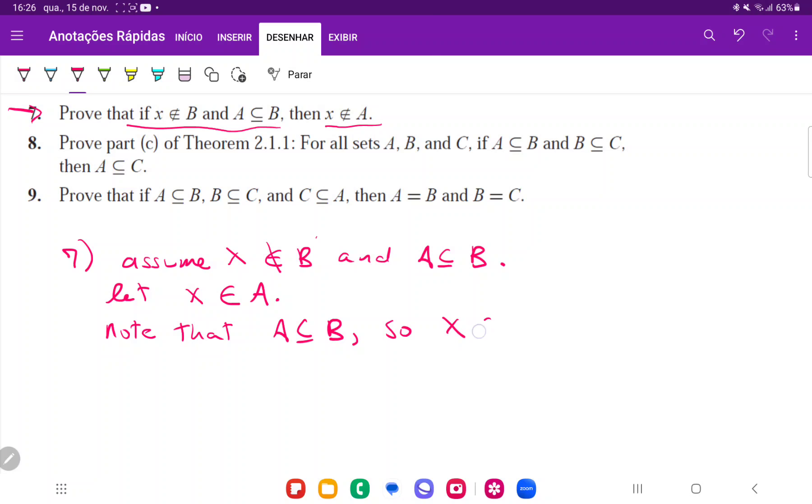So x must be in B, right? This is what it means for it to be a subset. We have that x belongs to B, but x does not belong to B, and x is not an element of B, which is a contradiction.